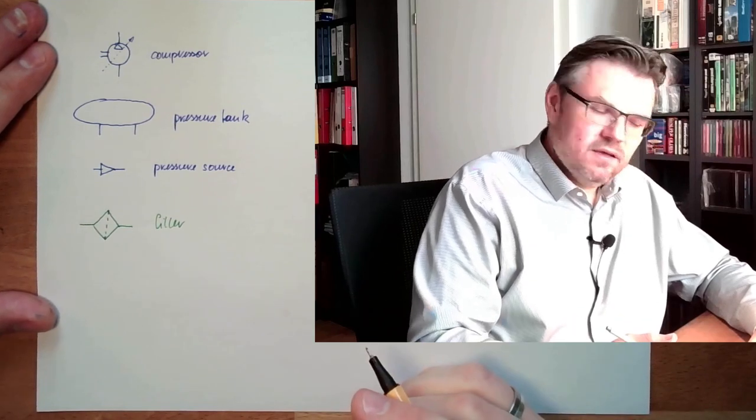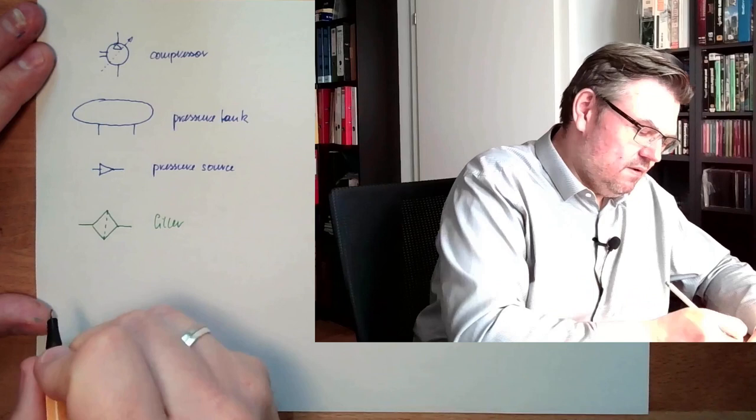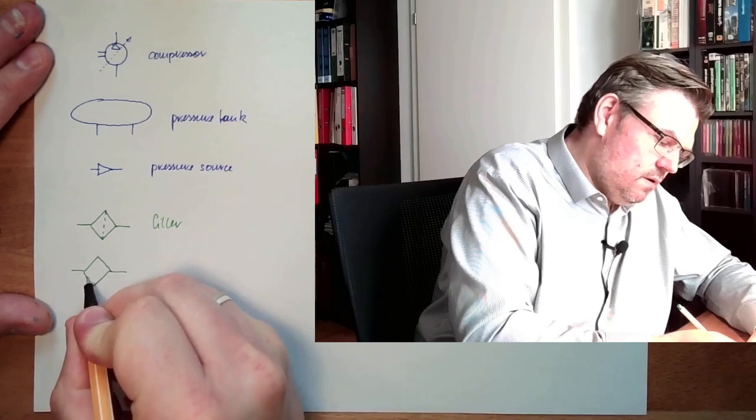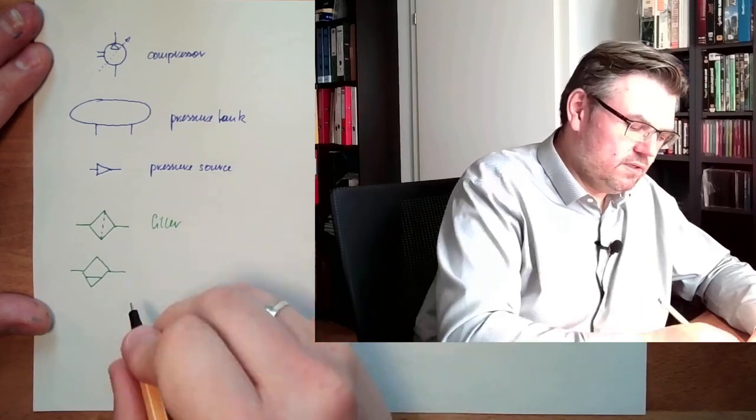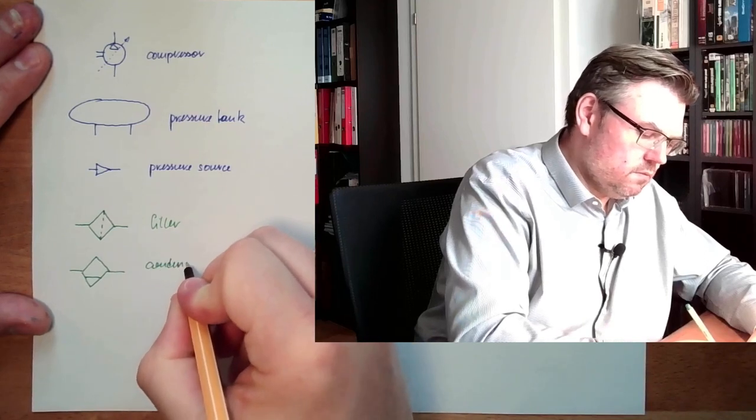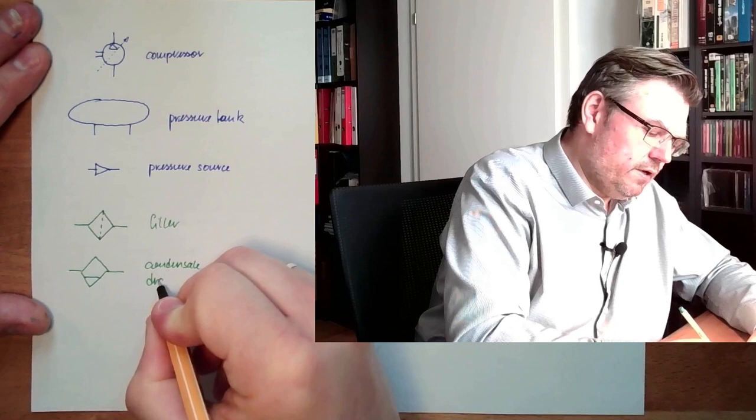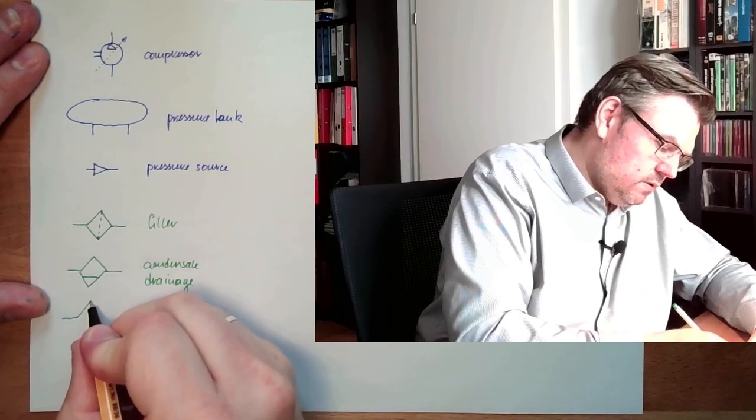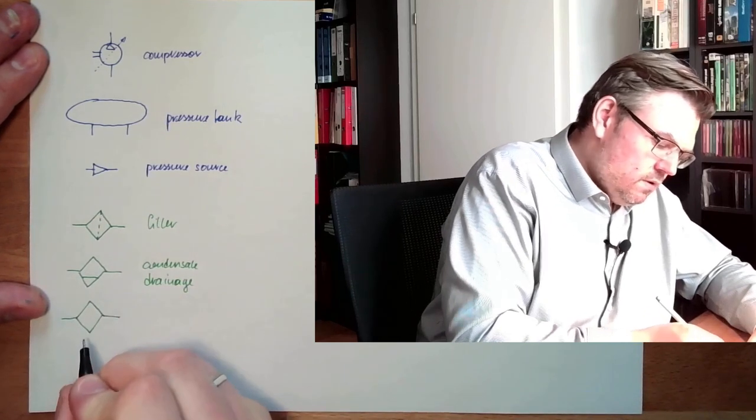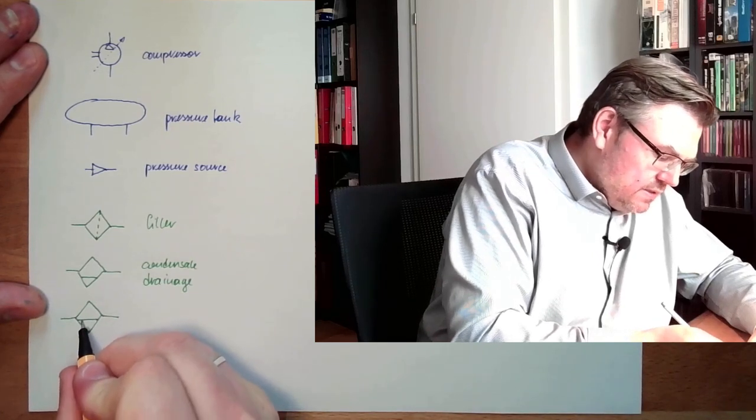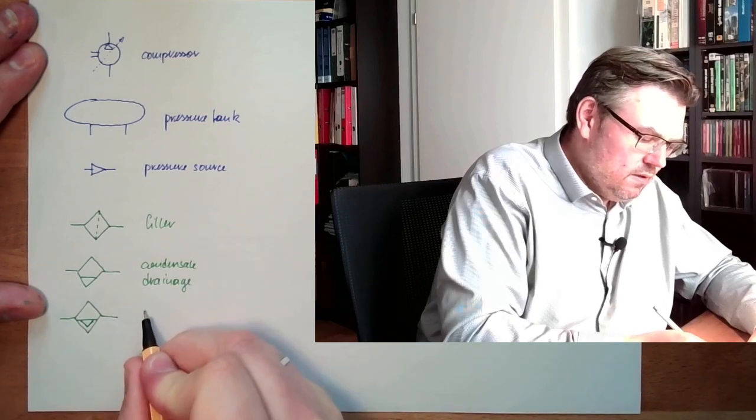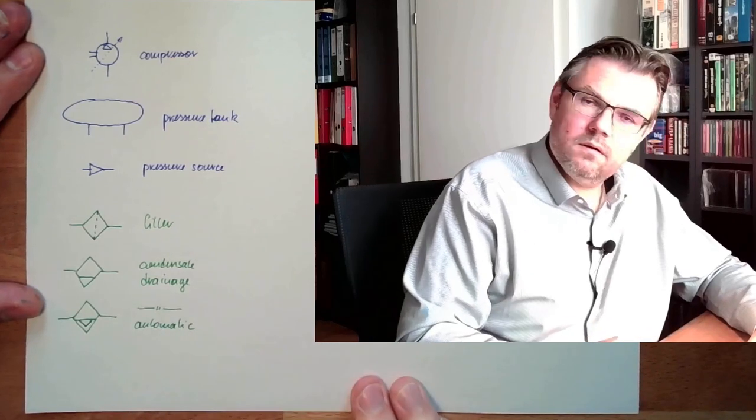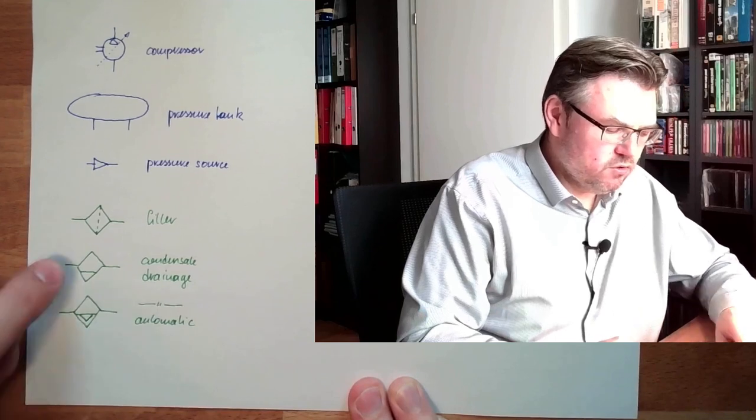Then we had a drainage element to get rid of condensate. Here is the condensate, condensate drip. This is a manual one. There are also automatic ones. Then we have the condensate, and this is drained automatically. This is the same, but automatic, simply by this additional triangle here.